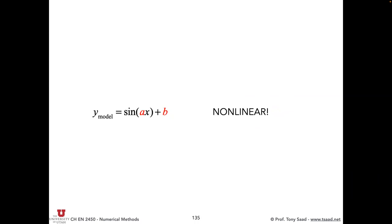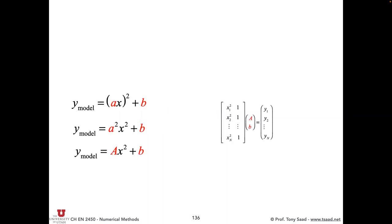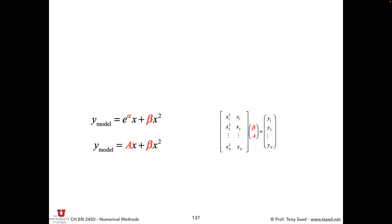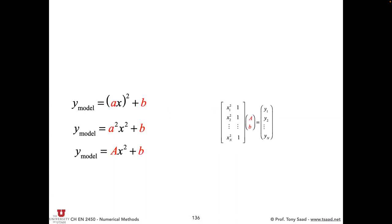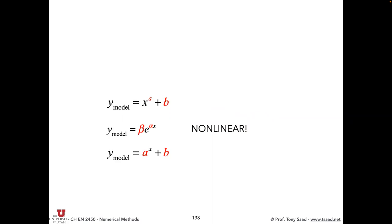The last model — non-linear — β shows up somewhat linearly but α does not. If you take the log, it becomes linear — we can linearize it. So the summary: linear, linear, non-linear, linear, non-linear, non-linear, linear, non-linear.